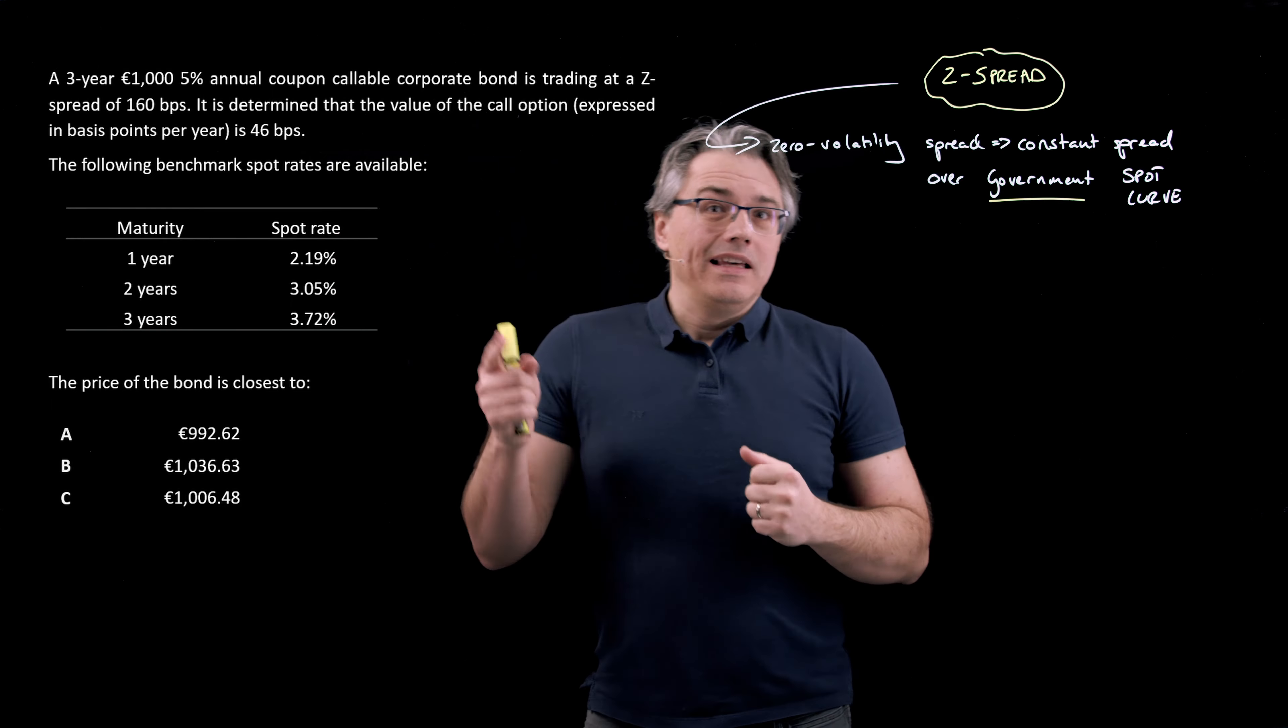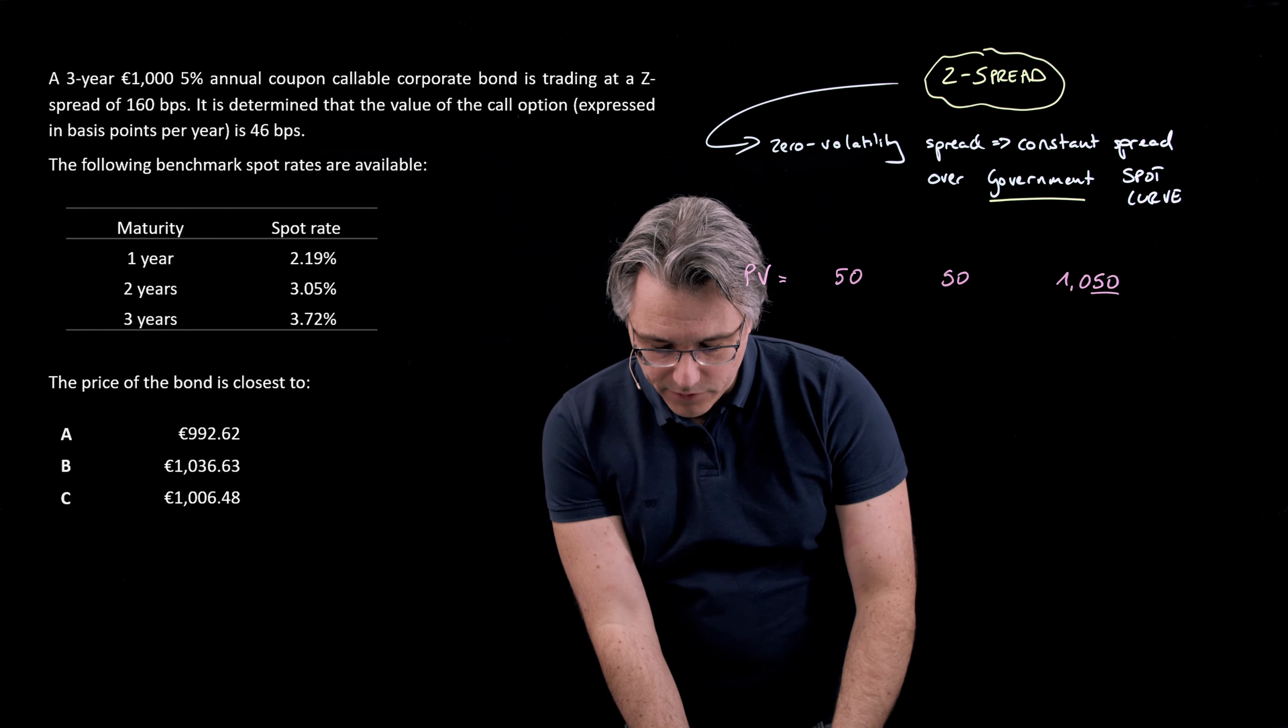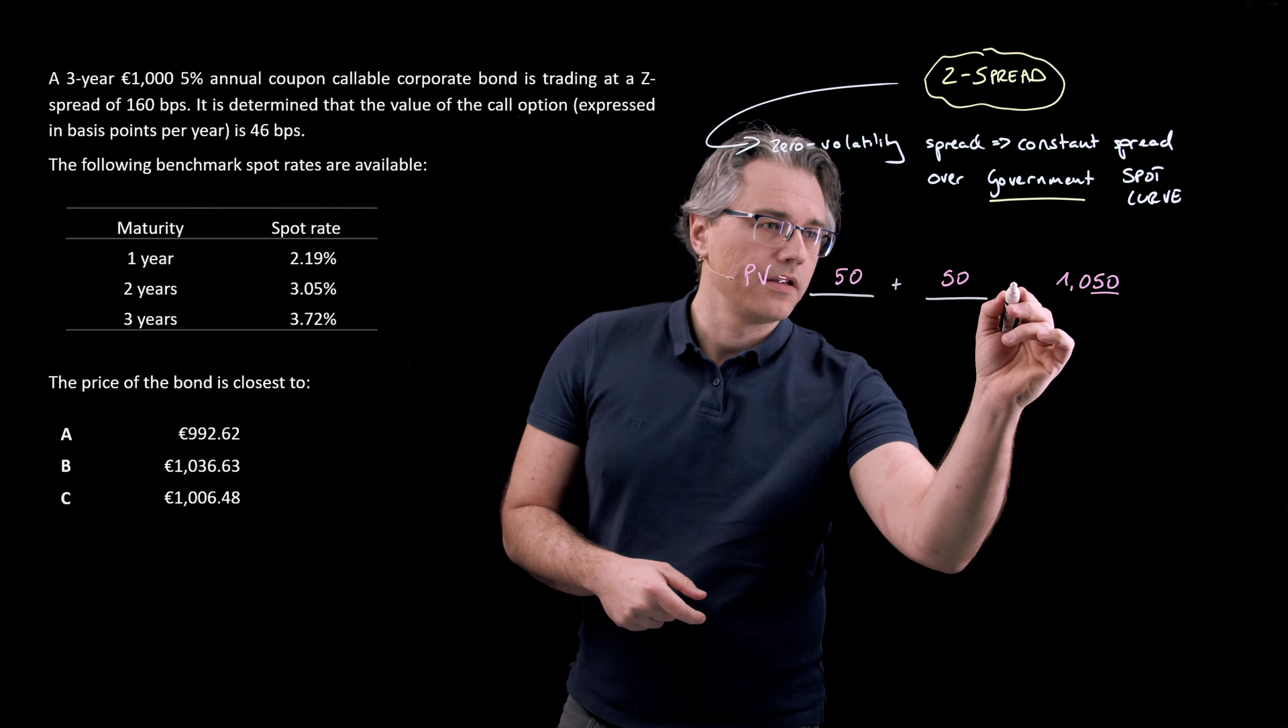In order to compute the value of the bond, which is what we're asked about here, compute its present value or today's price, I'm going to take the cash flows of that bond. It's a 1000 euro nominal value, three year bond with 5% coupon. So each coupon is simply going to be 50 euros, another 50 euros. And the third one is going to be 1000 and 50. That's the third cash flow, which includes the coupon and the return or the redemption of nominal value.